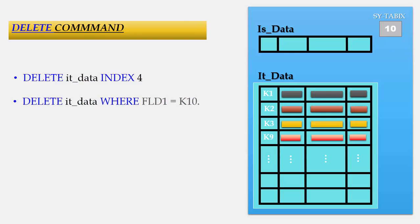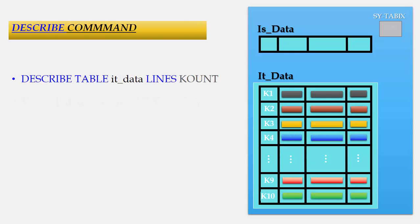The DESCRIBE statement is used to find the number of records present in our internal table. The syntax is: DESCRIBE it_data LINES count, where count is a variable declared in the program that will hold the number of records in the it_data table. Once executed, count would hold the value 10. Another way to get the number of records is: count = LINES( it_data ). This also acts as a DESCRIBE statement and gives the number of records present in the internal table.